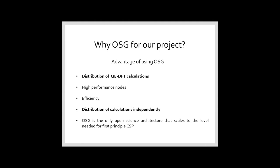So why do we use the OSG for our project? We use the software Quantum Espresso for the energy calculation for each structure. We distribute this energy calculation through the OSG nodes because of the high performance and efficiency of these nodes. It's very important for us that the OSG allows us to distribute the calculations independently. That means we can evaluate each possible structure independently of the others. And the OSG is the only open-science grid that scales to the level needed for crystalline structure prediction.